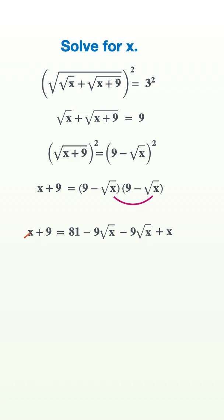Next, let's subtract x from both sides, then subtract 81 from both sides to get negative 72 on the left. On the right, we combine like terms to get negative 18 times the square root of x.